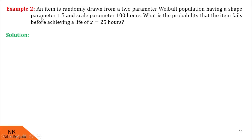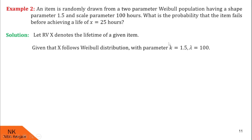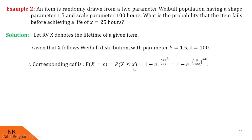In this example, we are given that an item is randomly drawn from a two-parameter Weibull population having a shape parameter of 1.5 and a scale parameter of 100 hours. We are asked: what is the probability that the item fails before achieving a life of 25 hours? Let random variable x denote the lifetime of the item. Given k equal to 1.5 and lambda equal to 100, the CDF is P(X ≤ x) = 1 minus e^(−(x/100)^1.5).